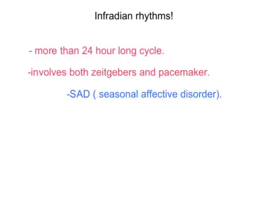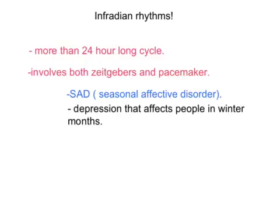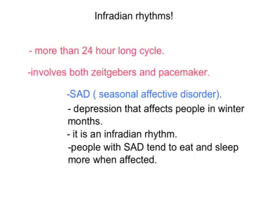In recent years there has been increasing interest in a human psychological disorder known as seasonal affective disorder, often shortened to SAD. This is a form of depression that regularly affects vulnerable people during the winter months and is classified as an infradian rhythm. People with SAD tend to eat and sleep more when affected. Research into treatments for SAD provides a clue towards its cause — for some, but not all sufferers, a brief exposure to bright light in the morning can be effective. This links back to external zeitgebers and their effect on infradian rhythms.